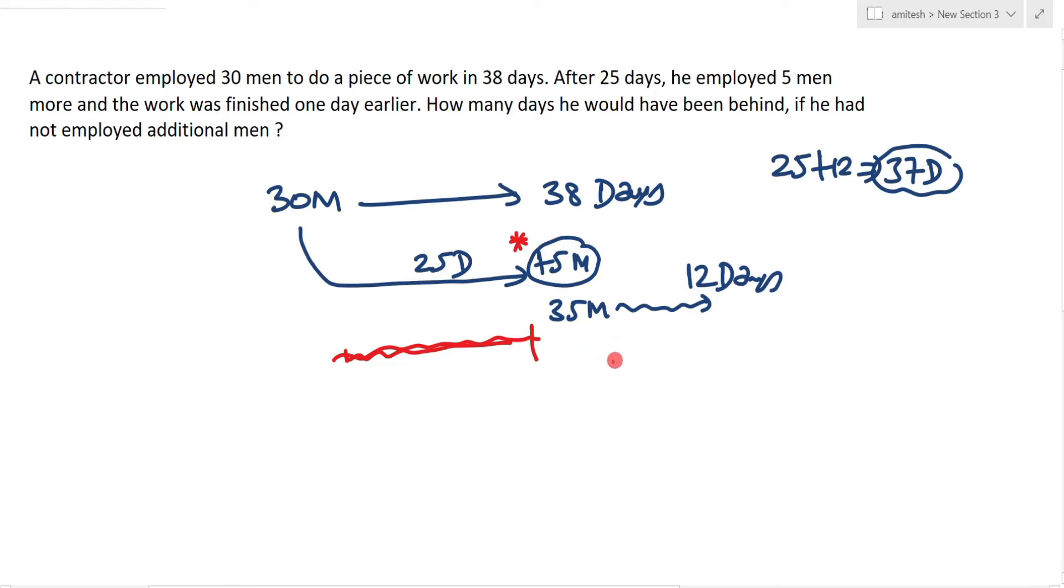The situation is very clear. Earlier, in the first phase, 35 men completed the rest of the job in 12 days. Now the workforce is 30 men, and you have to find how many days are required to complete the job. It's a very easy task. Forget the first 25 days of work.